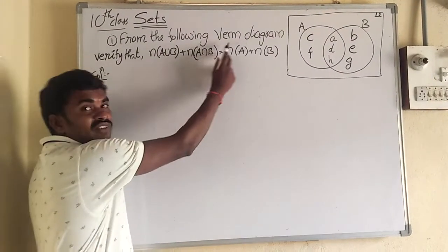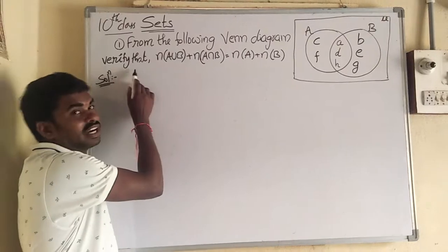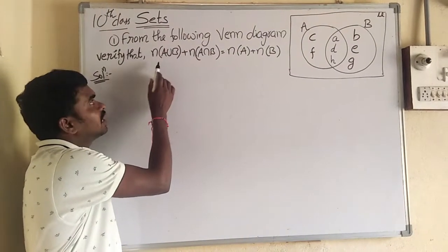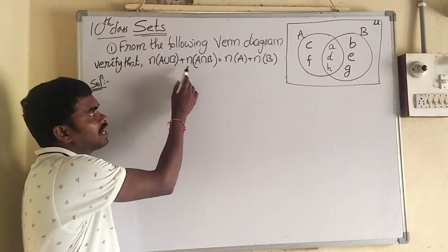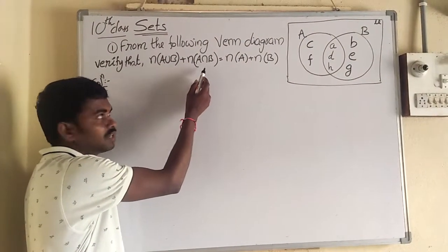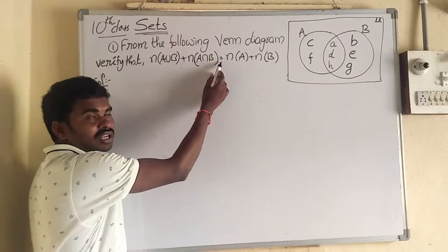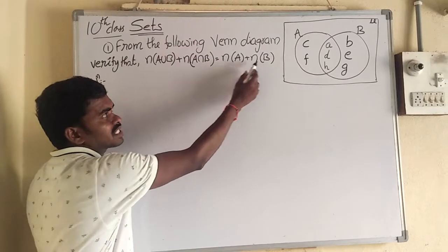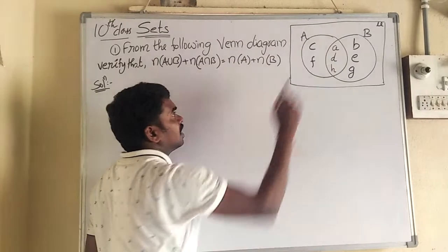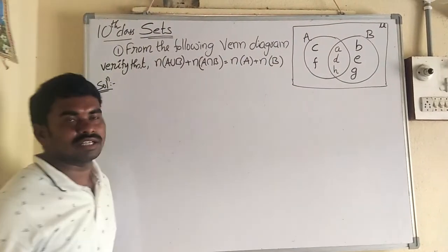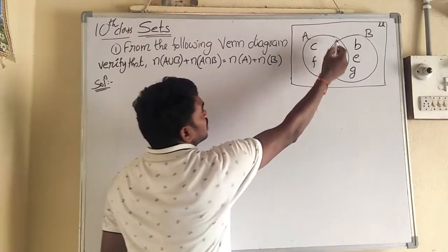From the following Venn diagram, verify that N of A union B plus N of A intersection B is equal to N of A plus N of B. So the Venn diagram is given on the right hand side. From the Venn diagram,